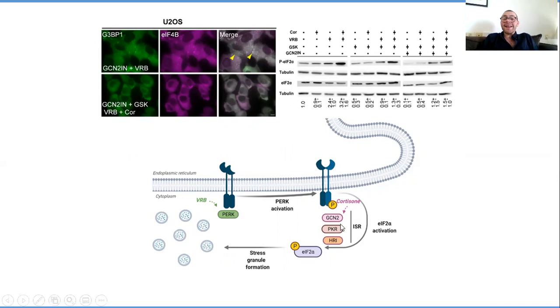The cortisone is actually activating a second kinase, and this second kinase is rapidly enhancing the rate of stress granule formation. But more importantly, it's also changing the properties of the stress granules.